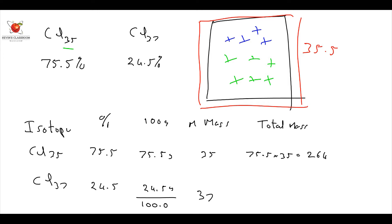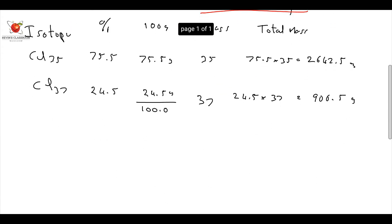2642.5. I do interchange commas and this one is going to be 24.5 grams that weigh 37. So, I have got 906.5 grams. These are grams. That is the total weight of the whole thing. I add it up. It comes to 3549 grams.